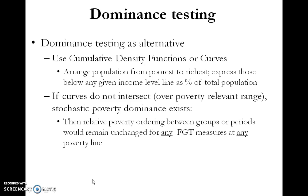When using dominance testing as an alternative, we use what we call a cumulative density function, or cumulative density curves. Basically, one arranges the population from poorest to richest and expresses those below any given income level as a percentage of the total population — shown on the y-axis. Once you've plotted your cumulative density functions, if the curves do not intersect over a poverty-relevant range, stochastic poverty dominance exists.